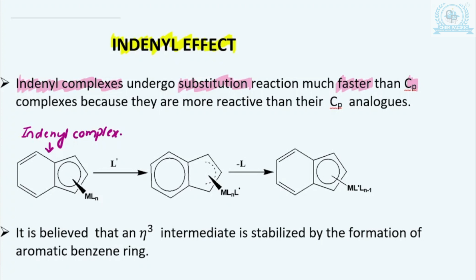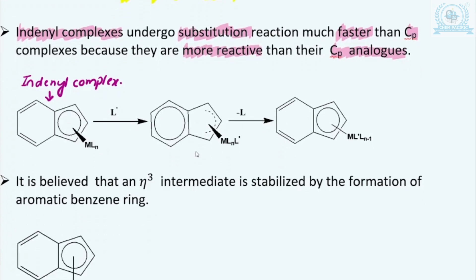A very significant difference is observed in Indenyl complexes. Especially in these Indenyl complexes, when substitution takes place, the rate of substitution is much much faster than its CP analogs. So as compared to CP analogs, these Indenyl complexes are far more reactive. Also, you must remember that this reaction must undergo through the associative pathway — not the dissociative pathway. This is very important because the dissociative pathway does not show such a fast rate.